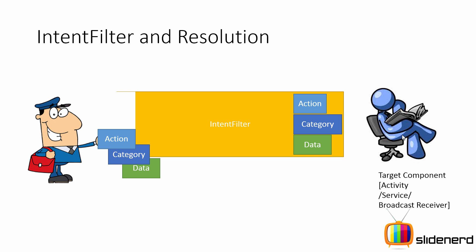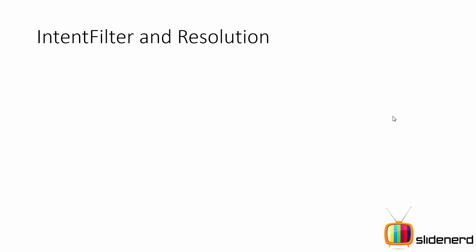You cannot just directly go to a Hollywood star's house and say hi — they have a security bodyguard. The intent filter works in a similar way. The intent that you create has action, category, and data. The intent filter inside your manifest file in the XML also defines action, category, and data, and using certain rules these things are matched to check if this intent is capable of being delivered to this activity, service, or broadcast receiver. This whole process is known as intent resolution.